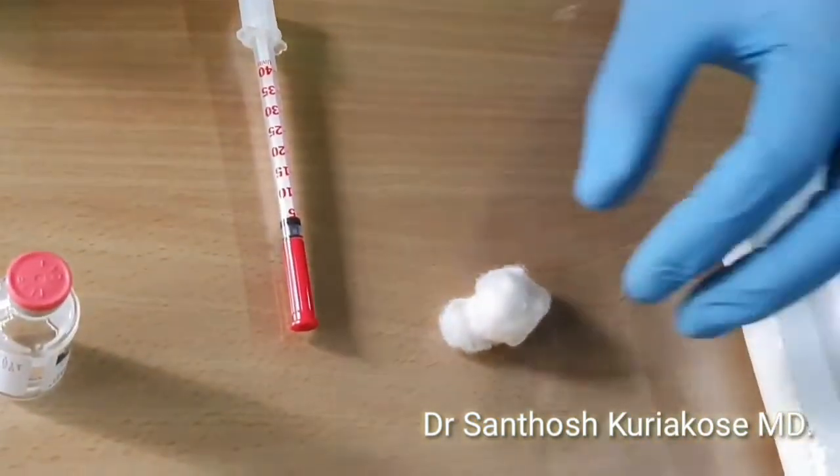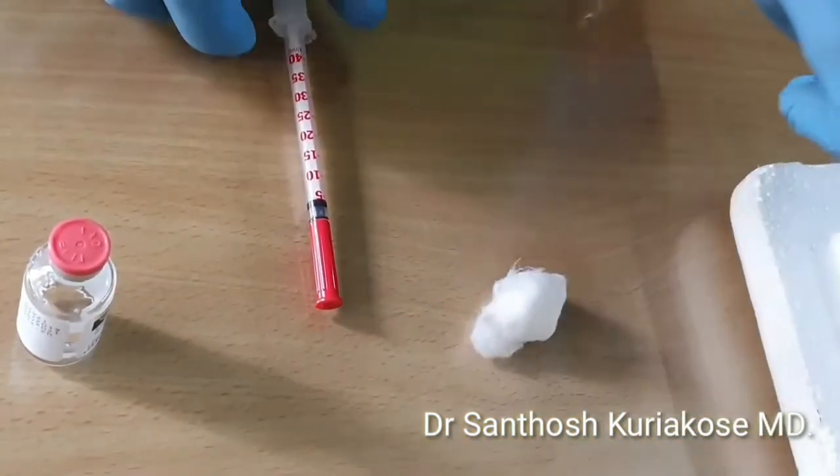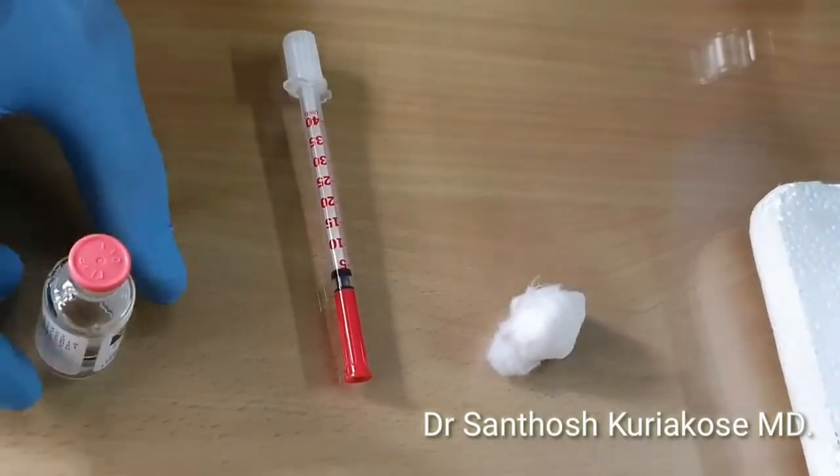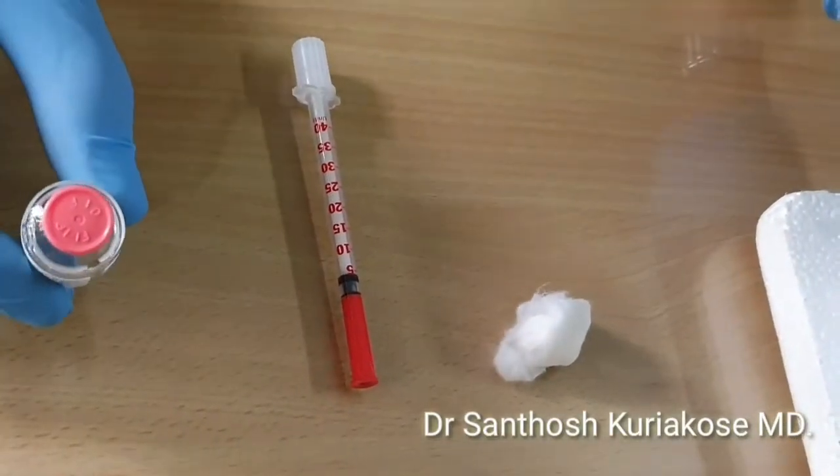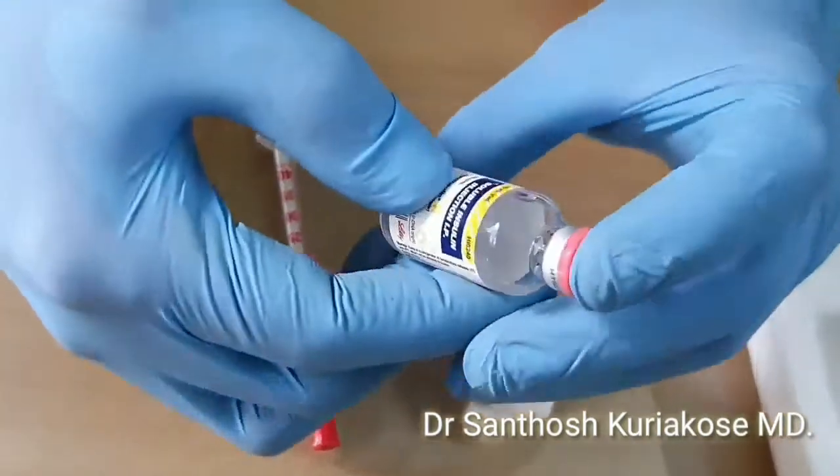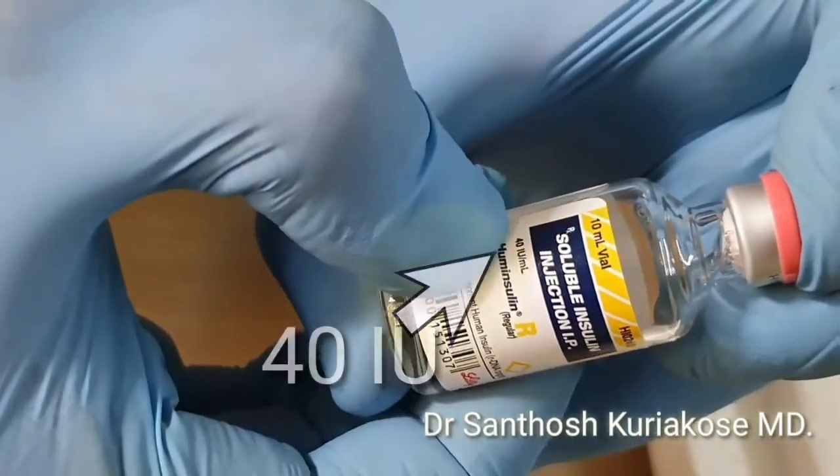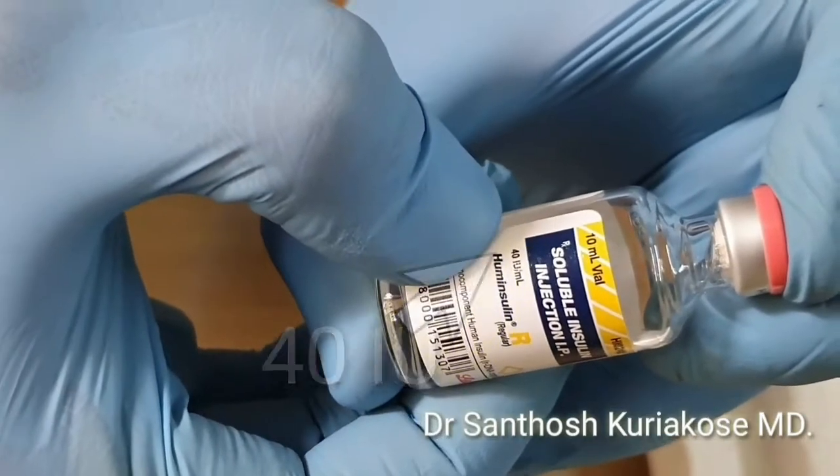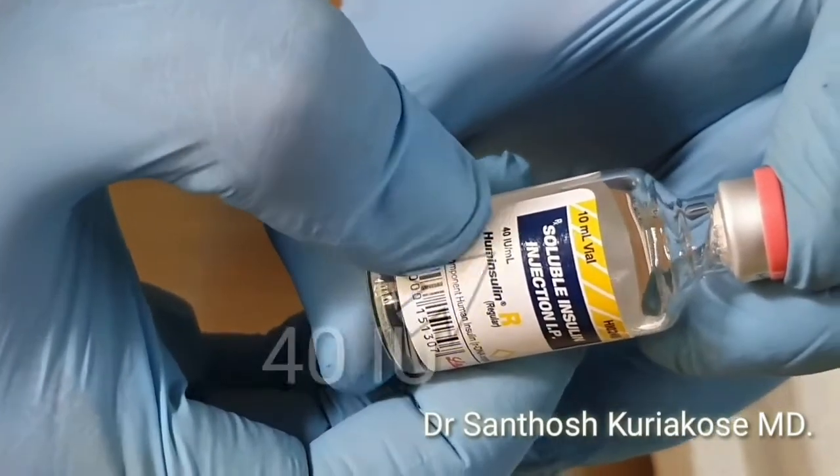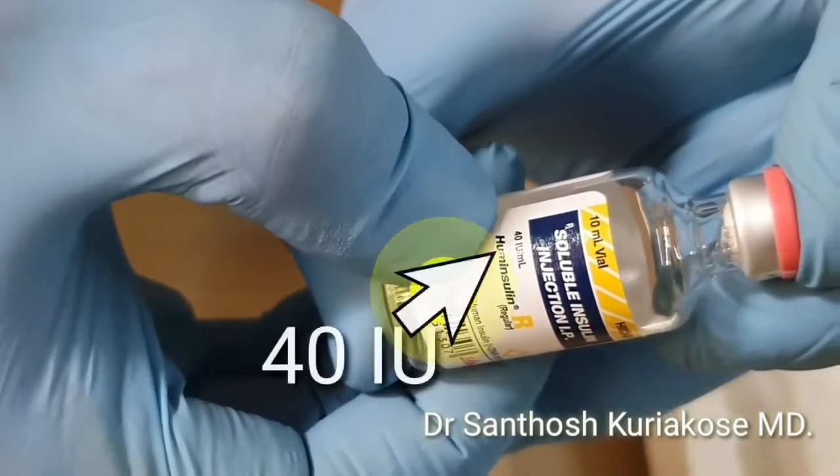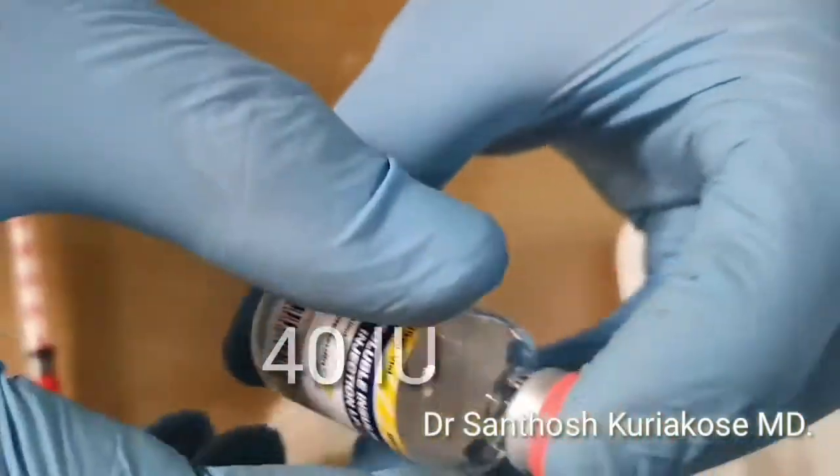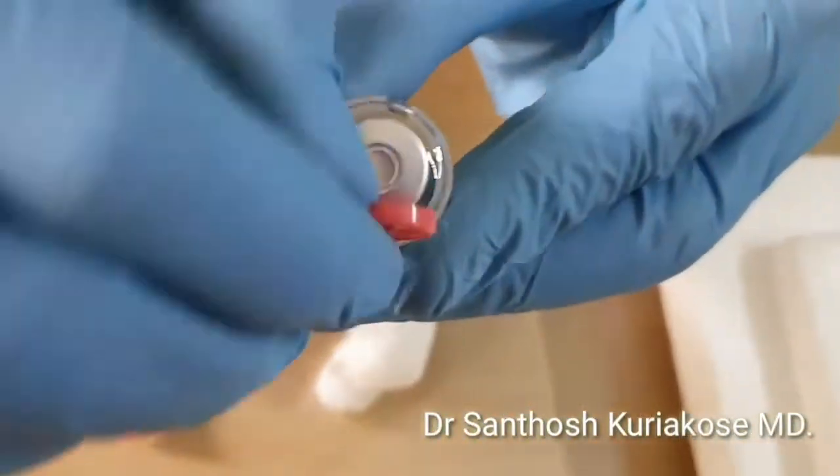To inject insulin, we need to have a spirit swab, the syringe to inject, and the insulin vial. If you see the insulin vial, it will be written either 40 or 100 IU. Here we are using the 40 IU, which will be prescribed by your doctor.